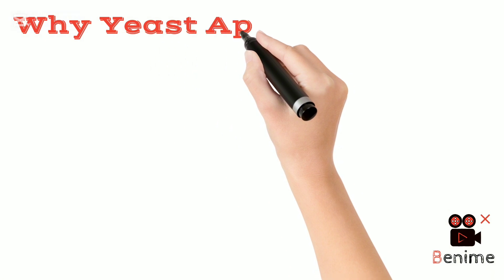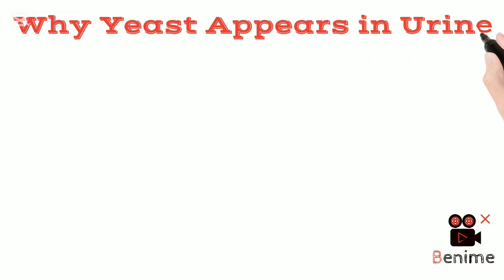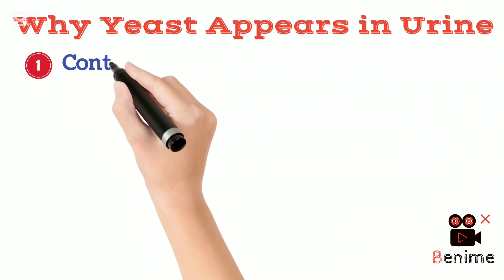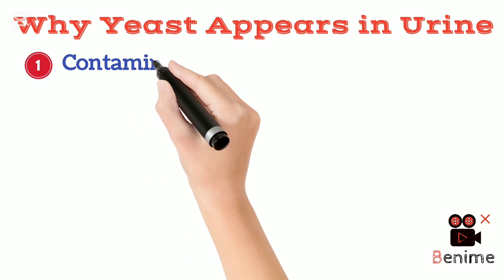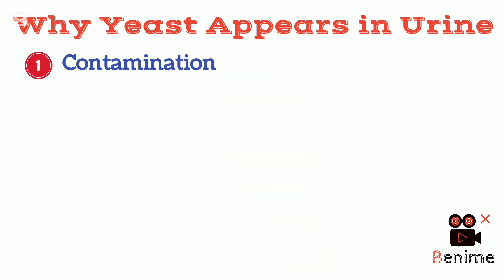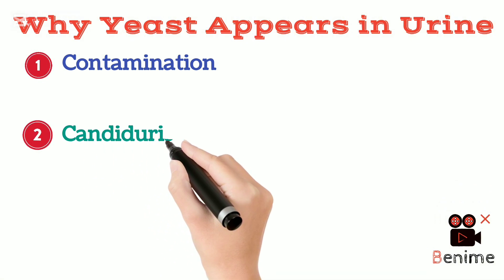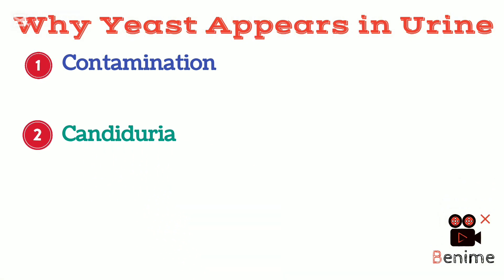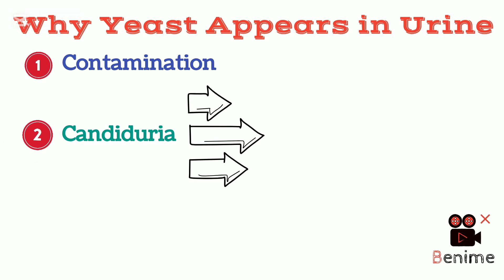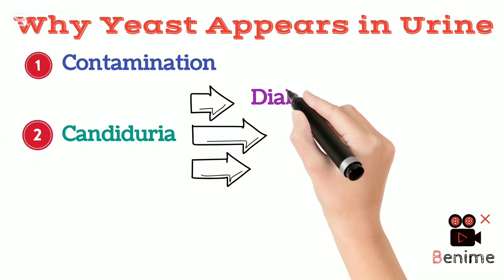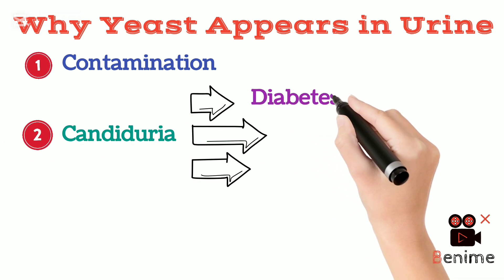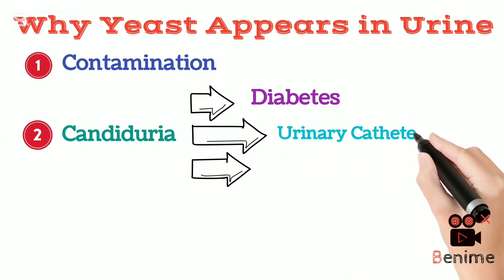Now, why does yeast appear in urine? A number of different factors can contribute to this. But the major one is contamination, which is most common in women while collecting a urine sample. The second one is Candiduria, which is a real fungal infection of the urinary tract. Different factors like diabetes, urinary catheter usage, and immunocompromisation support this.